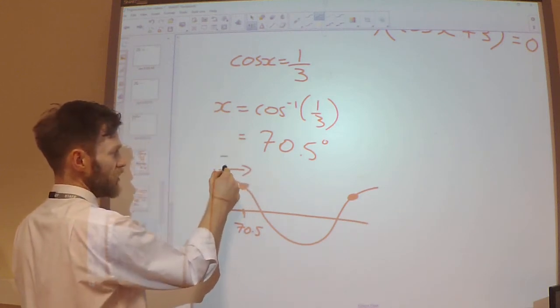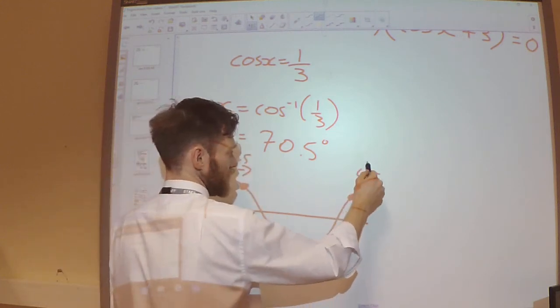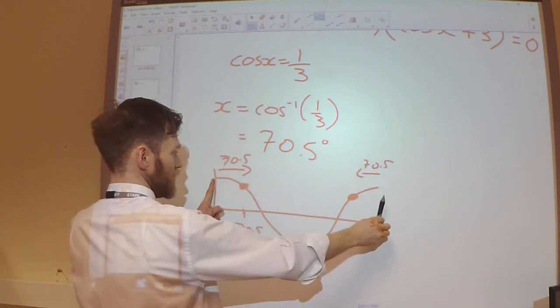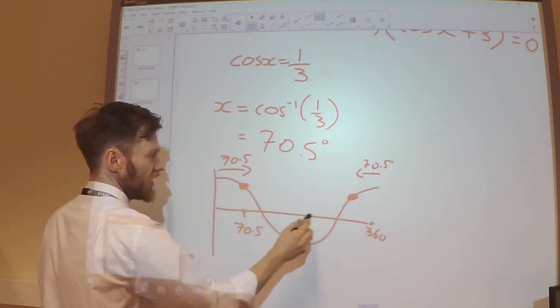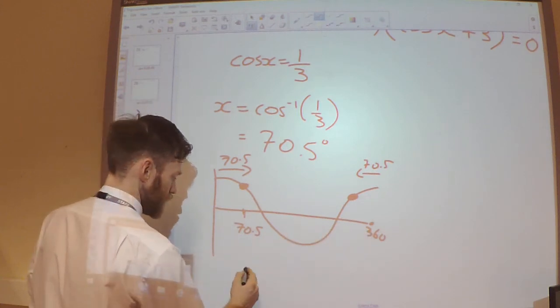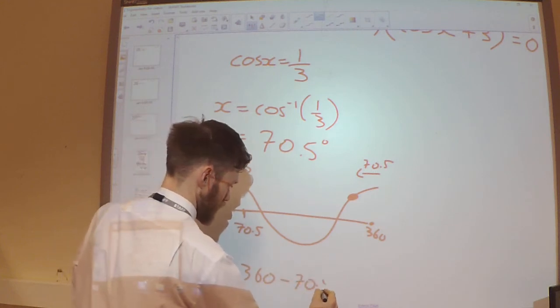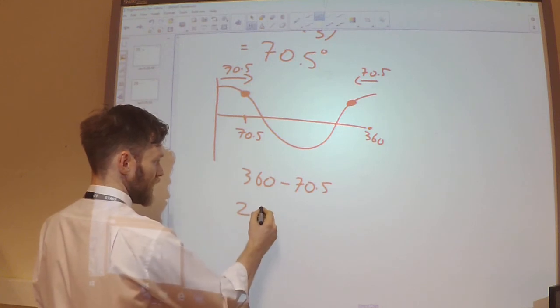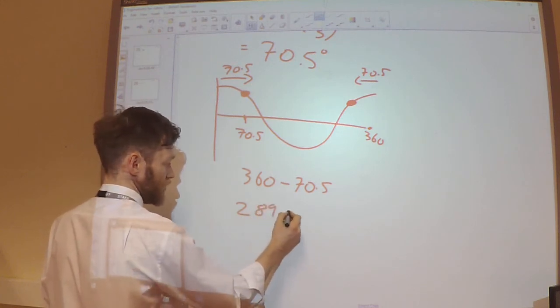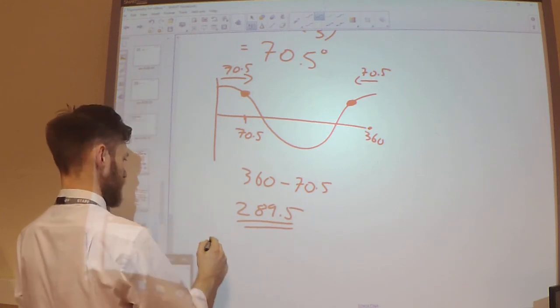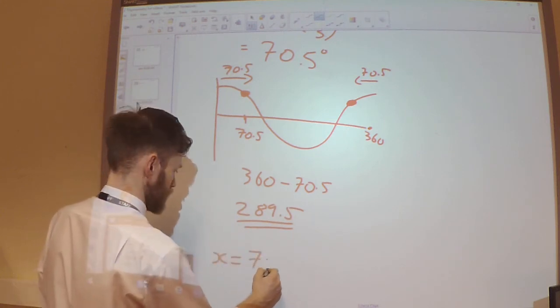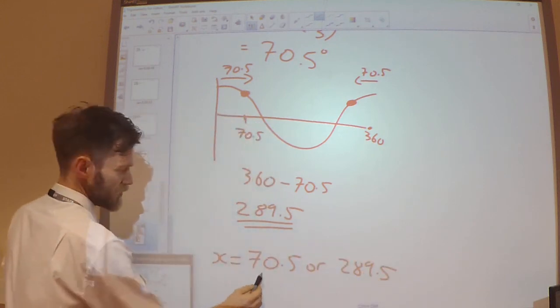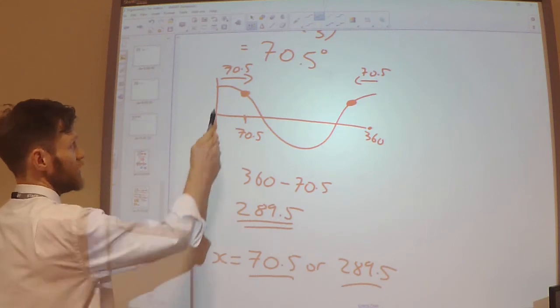If it's 70.5 from 0, it's going to be 70.5 from 360. Because these are my two equivalent points. So 360 take away 70.5 is going to be 289.5. So these are my two solutions from this bracket.